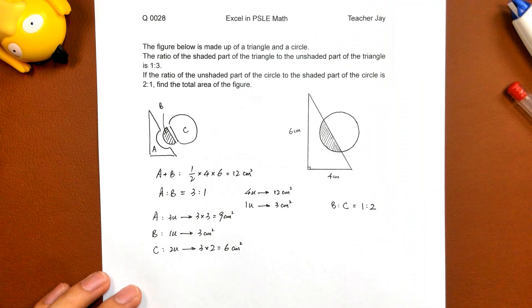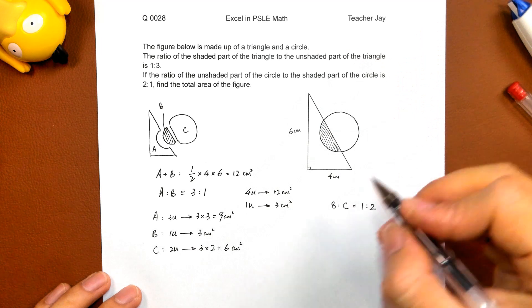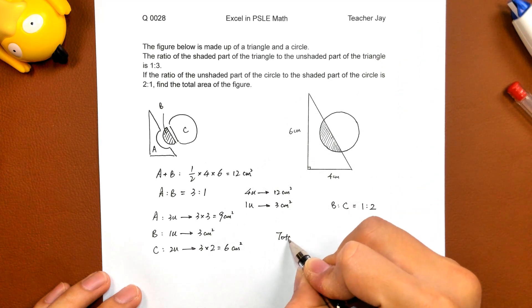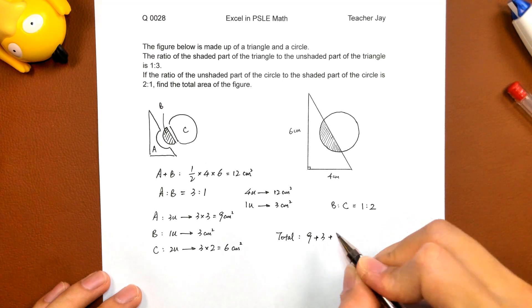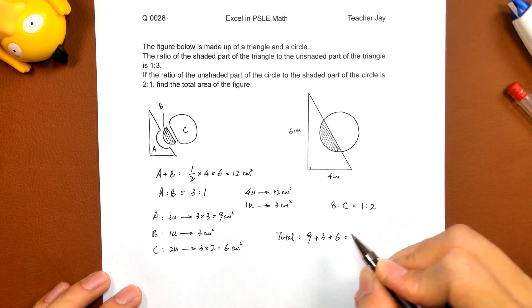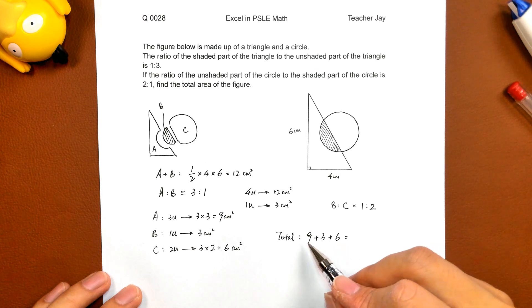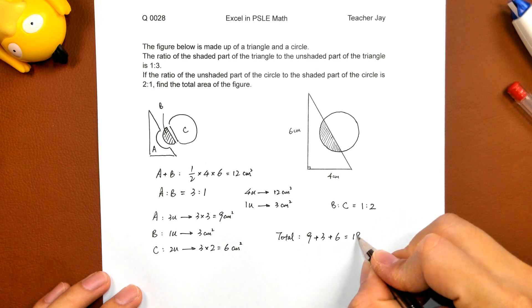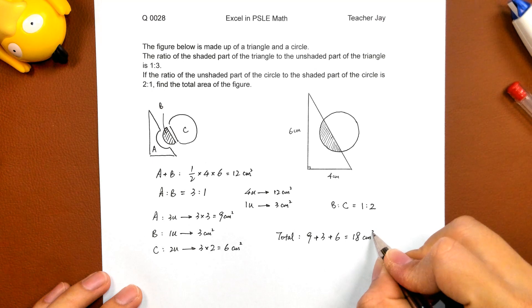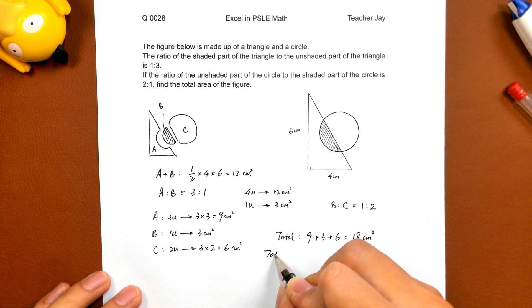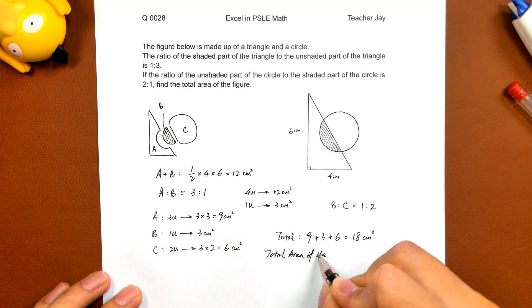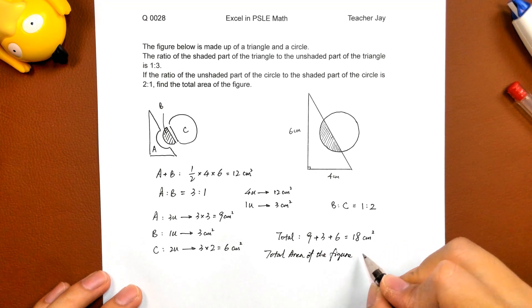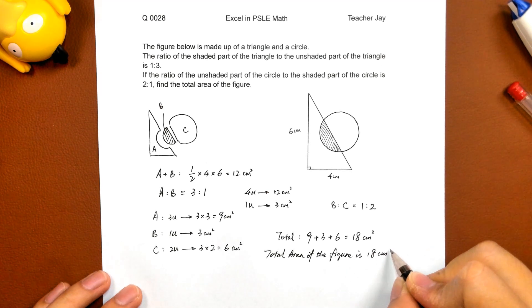Find the total area of the figure. 9 plus 3 plus 6, 9 plus 9, plus 18. So the total area of the figure is 18 square centimeters.